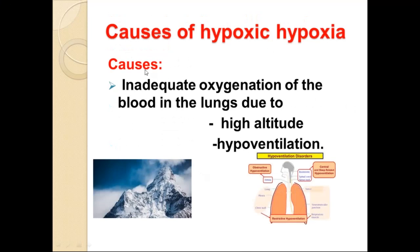The causes of hypoxic hypoxia include: inadequate oxygenation of blood in the lungs due to high altitude and hypoventilation. At high altitude, the barometric pressure falls, reducing the partial pressure of oxygen, so less oxygen is available to the lungs for oxygenating the blood.